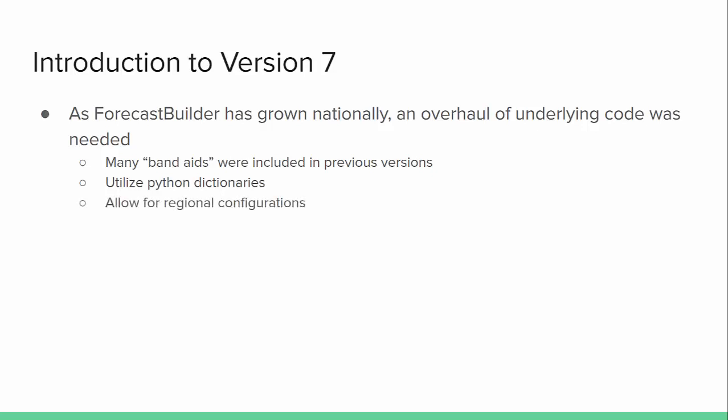Also to allow for regional configurations, in this release we now have an actual configuration file called Forecast Builder Regional Config. This is where each region has the ability to put their policy into this configuration file, which also makes things simpler for you, the forecast office, when it comes to configuration. Additionally, this release gives the ability to utilize the MBM 3.2 precipitation types. Previously, Forecast Builder did not utilize any of the MBM precipitation types. This will be new for 3.2, because 3.2 has a lot of advantages when it comes to precipitation type, which we'll discuss later.